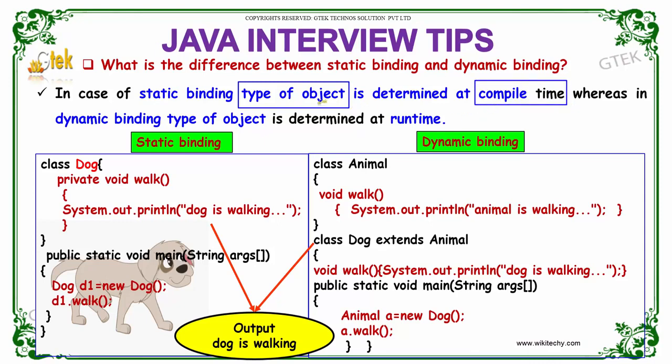Whereas in dynamic binding, the type of the object is determined during the run time.